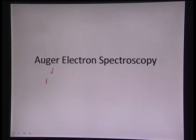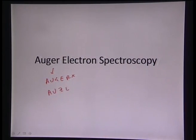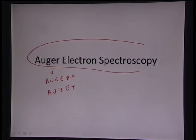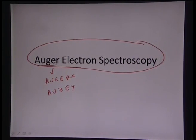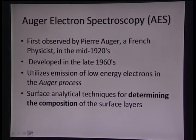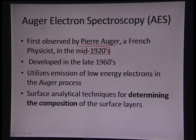In this lecture, we will learn about Auger electron spectroscopy. The spelling is O-U-G-E-R, but it is not pronounced as 'Auger' — it is pronounced as 'Auger' (A-U-Z-E-Y), named after Pierre Auger, a French physicist who initially observed the Auger effect in the mid-1920s. This process was developed only in the late 1960s.